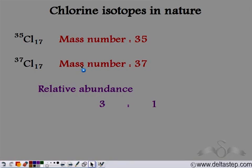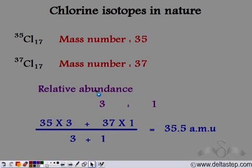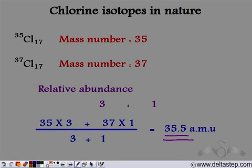The relative abundances of the two isotopes are in a 3:1 ratio, meaning the first isotope ³⁵Cl is three times as abundant as the second isotope ³⁷Cl. To calculate the relative atomic mass of chlorine, we take the mass number of each isotope, multiply it by its relative abundance, add them together, and divide by the total abundance. The relative atomic mass of chlorine is therefore not 35 or 37, but 35.5 atomic mass units.